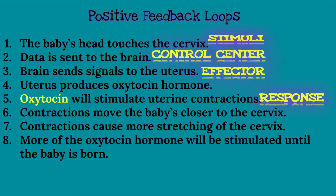Contractions will then move the baby's head closer to the cervix, causing more stretching of the cervix. A positive feedback loop results in more of a product — in this example, the product is the oxytocin hormone, which will lead to more contractions until the baby is born. So as you can see, in the positive feedback loop, the body isn't trying to decrease the change in variable; it's reinforcing it. However, this feedback loop will still lead to the body reaching its normal state after the baby is born, but the body can't give birth without increasing output, making this a positive feedback loop.